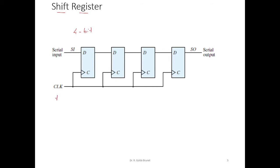At time t=0, the flip-flops are storing 0 0 0 0 as the initial value. At time t=1, let the serial input be 1. That input is accepted by the first flip-flop, and at the same time, whatever is stored in the first flip-flop is transferred to the second one — so this flip-flop accepts 1, and the data shifts along the chain.